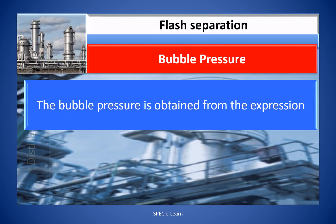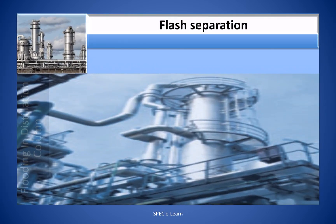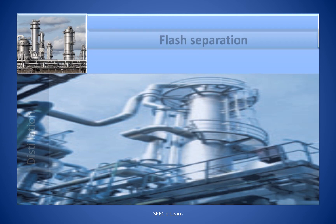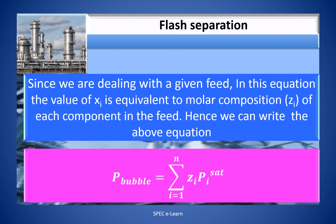Bubble pressure is calculated from the expression: P_bubble = Σ Xi × Pi_sat, where Pi_sat is the vapor pressure of component i at the flash temperature, and Xi is the mole fraction of the component in the liquid phase. Since we are dealing with a given feed, the value of Xi is equivalent to the molar concentration Zi of each component in the feed. Hence, we can write: P_bubble = Σ Zi × Pi_sat.